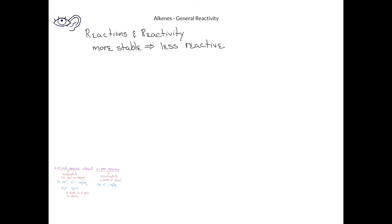Before we get too much further into a discussion of the reactions of alkenes, let's talk about the reactivity in general of alkenes. We've already seen that alkenes can be reactive due to their pi bond, which is an electron pair to be shared. When we look at different kinds of alkenes, we see that how stable or how reactive they are will depend on the groups that are attached to the sp2 hybrid carbon atoms.